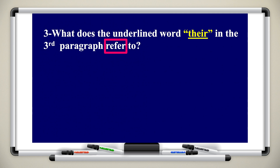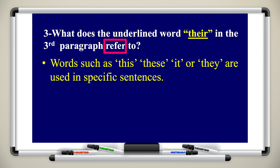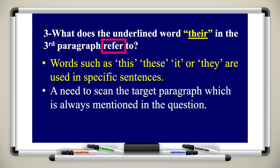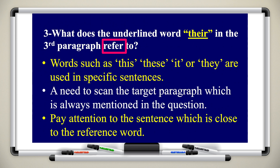Question three: what does the underlined word 'there' in the third paragraph refer to? Words such as 'this,' 'these,' 'it,' or 'they' are used in specific sentences. You need to scan the targeted paragraph, which is always mentioned in the question — here it's the third paragraph. Pay attention to the sentence which is closer to the reference word.